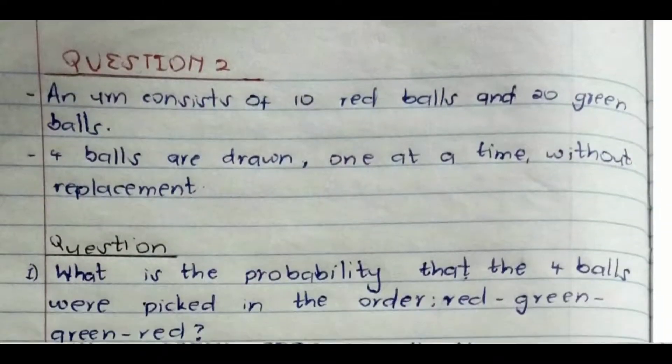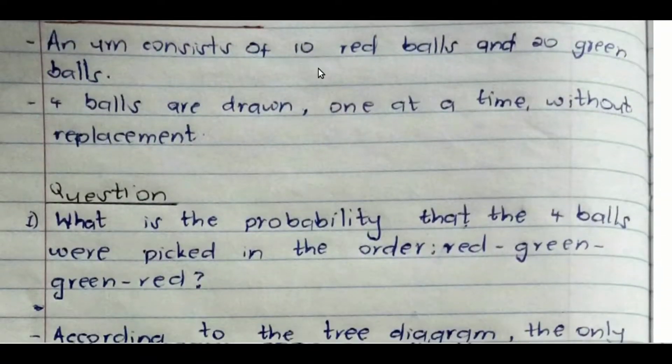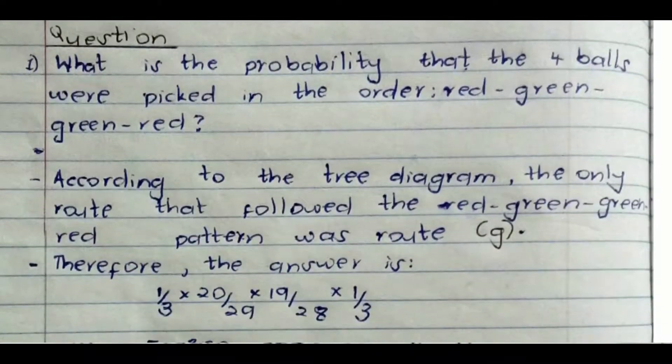If we go to the other equation, an urn consists of 10 red balls and 20 green balls. That means a total of 30 balls. Then, this is the problem. Four balls are drawn, one at a time, without replacement. Meaning, every time we pick, we are not returning it into the urn. So, the problem is, what's the probability that the four balls were drawn in the order of red, green, green, red?